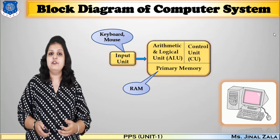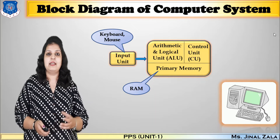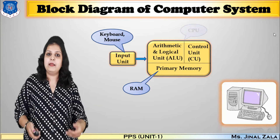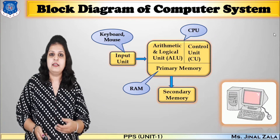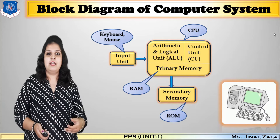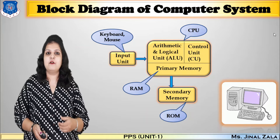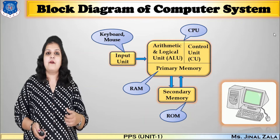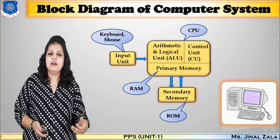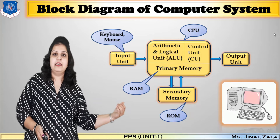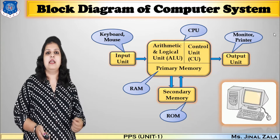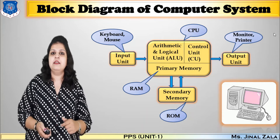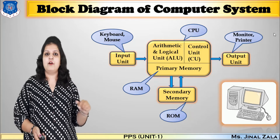The control unit manages all the different major components like input unit, output unit, memory, and any external devices. If you want to store your file permanently, it will be stored in secondary memory. Secondary memory is also called ROM — read-only memory. Hard disk is an example of secondary memory. Finally, if you want to see your file, it will show on the output unit. Monitor and printer are examples of output units. We can see our file on a monitor or get a hard copy using a printer. This is the block diagram of computer.